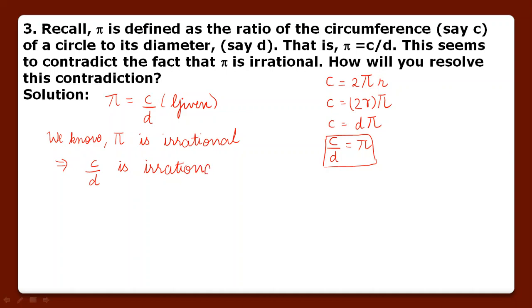When is c upon d irrational? We have studied in operations of real numbers (the video is there in description box) - what concept did we study about when a number is irrational? If it is in fraction form, then either c or d must be irrational.